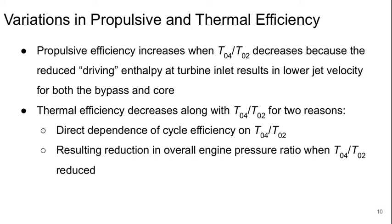The thermal efficiency decreases along with T0.4 over T0.2 for two reasons. First, there's the direct dependence of the cycle efficiency on that temperature ratio, and then in addition there's a resulting reduction in overall engine pressure ratio when T0.4 over T0.2 goes down, which also affects the cycle efficiency.